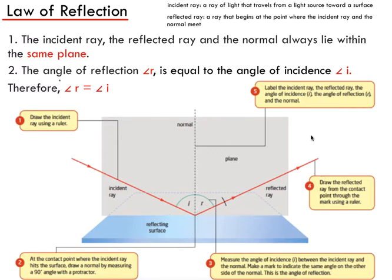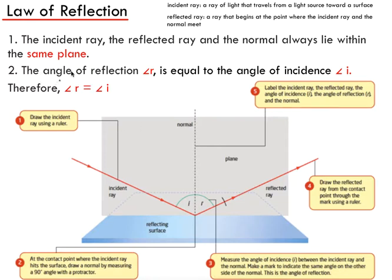The second point is that the angle of reflection, called R, is equal to the angle of incidence, called I — summarized as the reflected angle equals the incident angle. In this diagram you can see the incident ray coming towards the reflecting surface. Once it hits, you draw the dotted normal line, which is at 90 degrees perpendicular to the surface. The angle of incidence should be the same as the reflected angle.